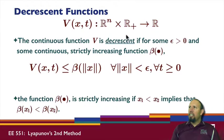So V is decrescent if I have this... it's bounded, basically, by this function of the norm of x for all x and t. The concept of strictly increasing means that if x1 is less than x2, then beta of x1 is less than beta of x2. So we have this concept of a decrescent function.